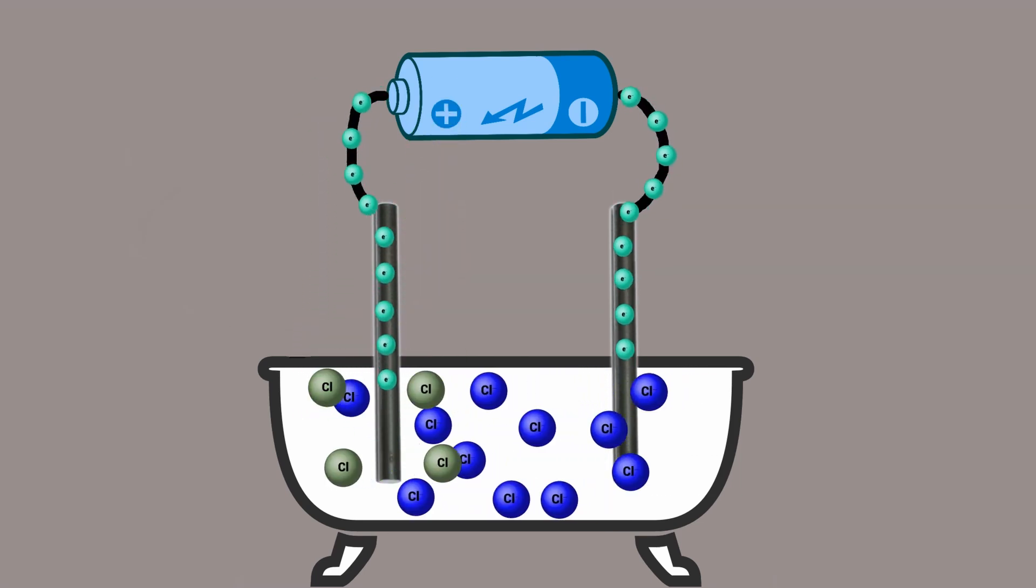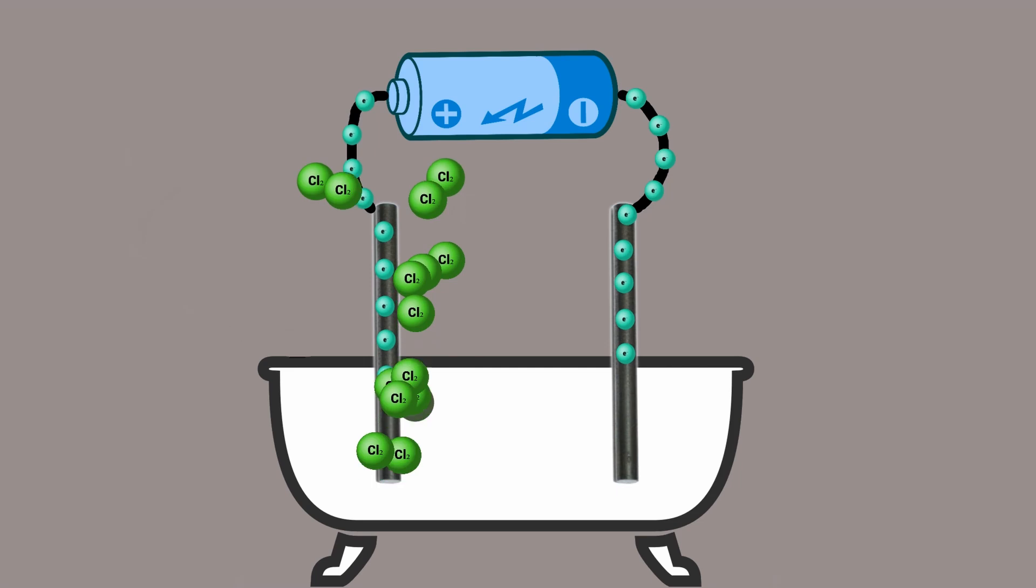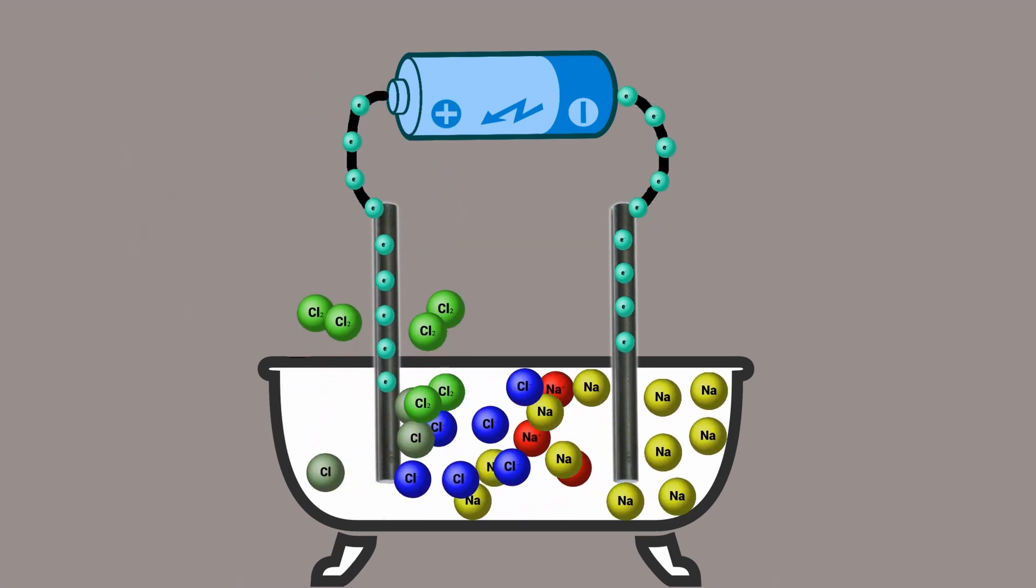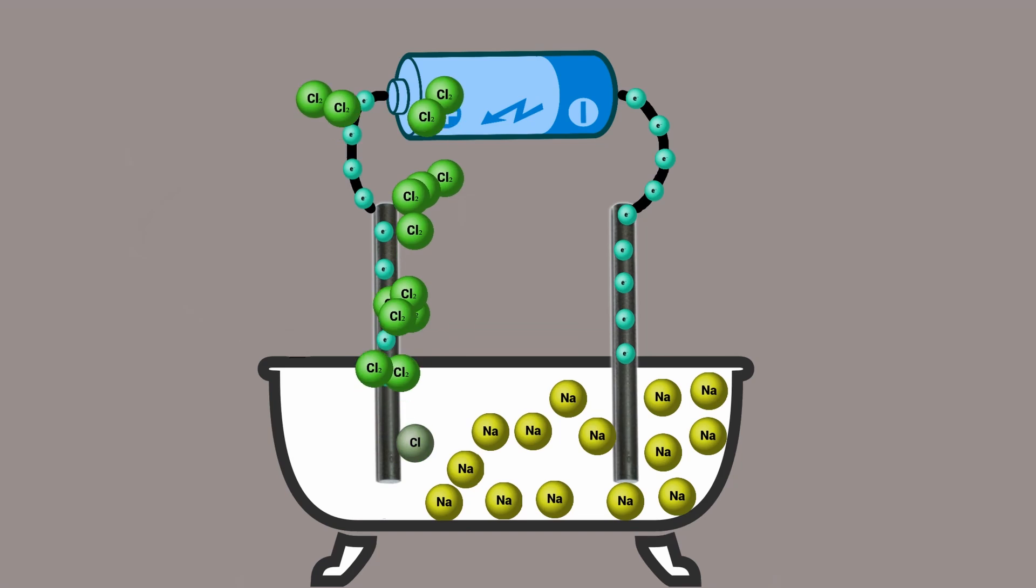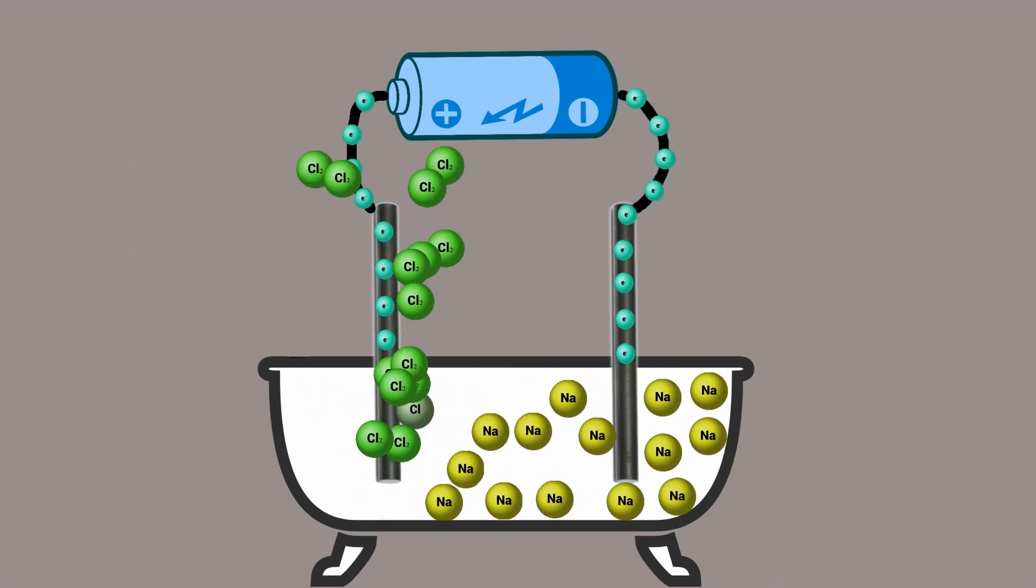Hypothetically, if we let this run for long enough, all the chlorine will leave the lava tub and eventually there will be just molten sodium. Let the lava tub cool off and what do you have? A block of sodium.